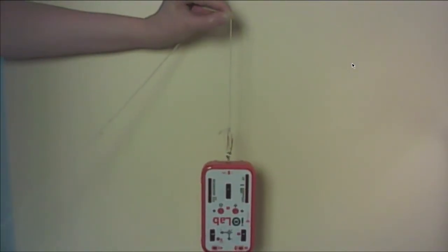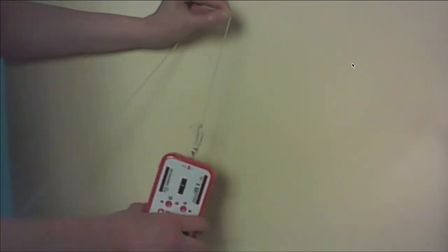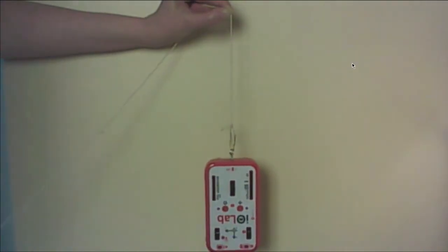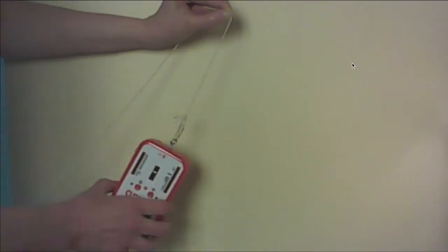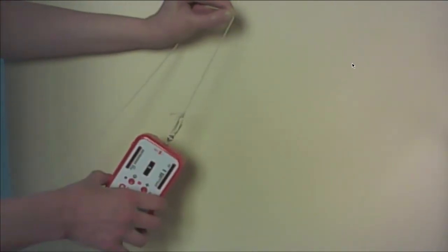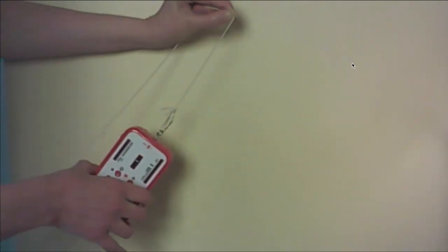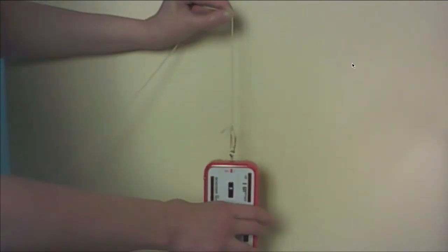We're going to be getting the time for one complete oscillation, T. From our graph, we're actually going to measure 10 of them and then divide by 10 to get the period of one oscillation. An oscillation is one complete back and forth motion like this. If this is my starting position, it's all the way over, all the way back is one oscillation.